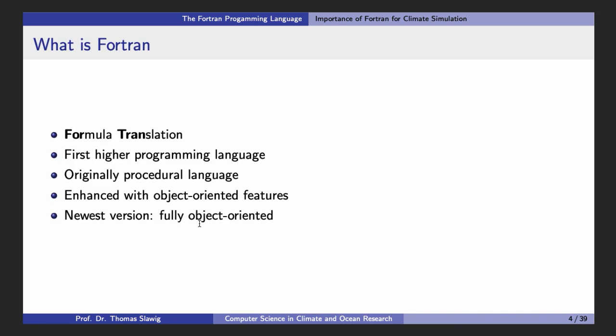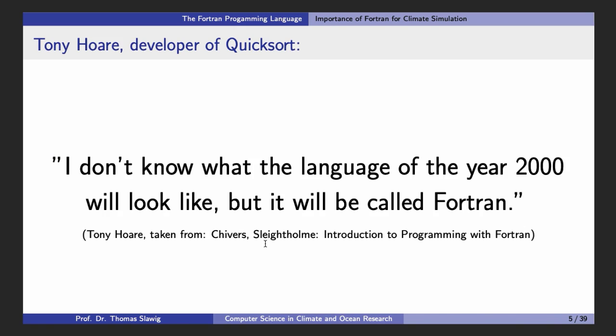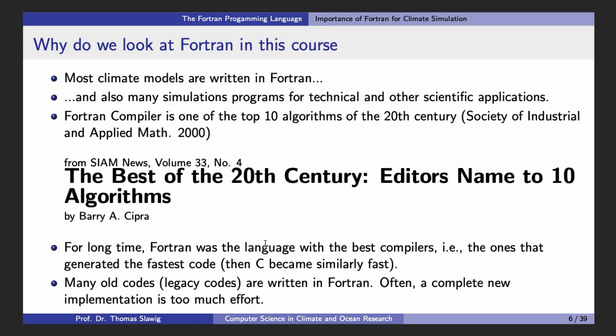Starting with the importance of the language, what is FORTRAN? The name comes from formula translation and FORTRAN was the first higher programming language. It was originally a procedural language but in its history it was enhanced with object-oriented features. So in the latest version the language is fully object-oriented. Although this is not much used in climate models or climate simulations. There is this quote which is already very old: 'I do not know what the language of the year 2000 will look like but it will be called FORTRAN.' This is from the developer of Quicksort. Many people in computer science maybe think that FORTRAN is not important because usually if you study computer science you don't learn FORTRAN, you learn Java or C or C++. But FORTRAN is still present and one application area where it is present is climate models, and that's the reason why we look at FORTRAN in this course.